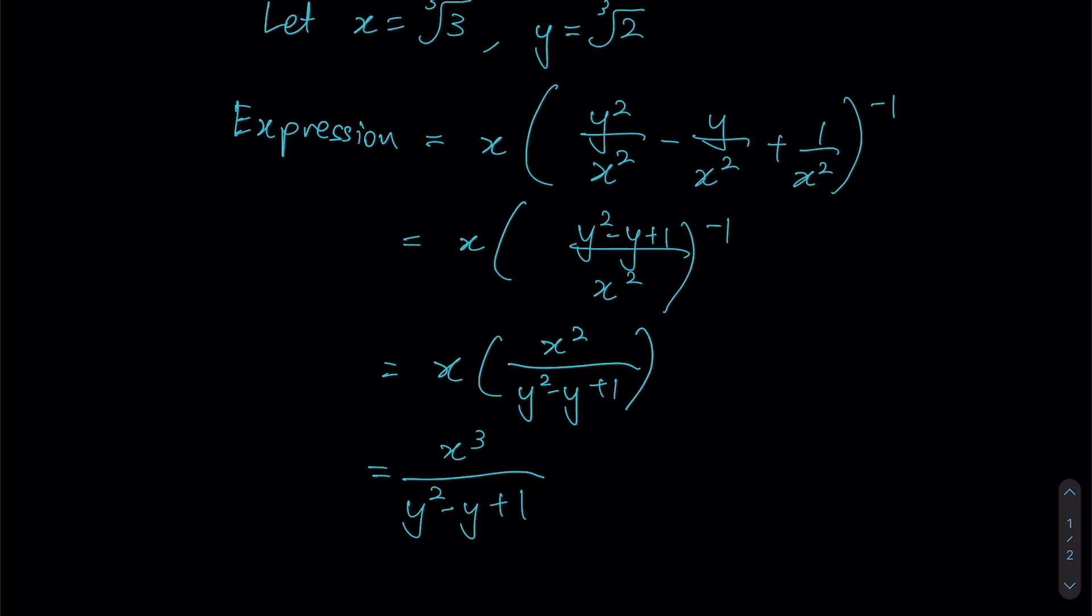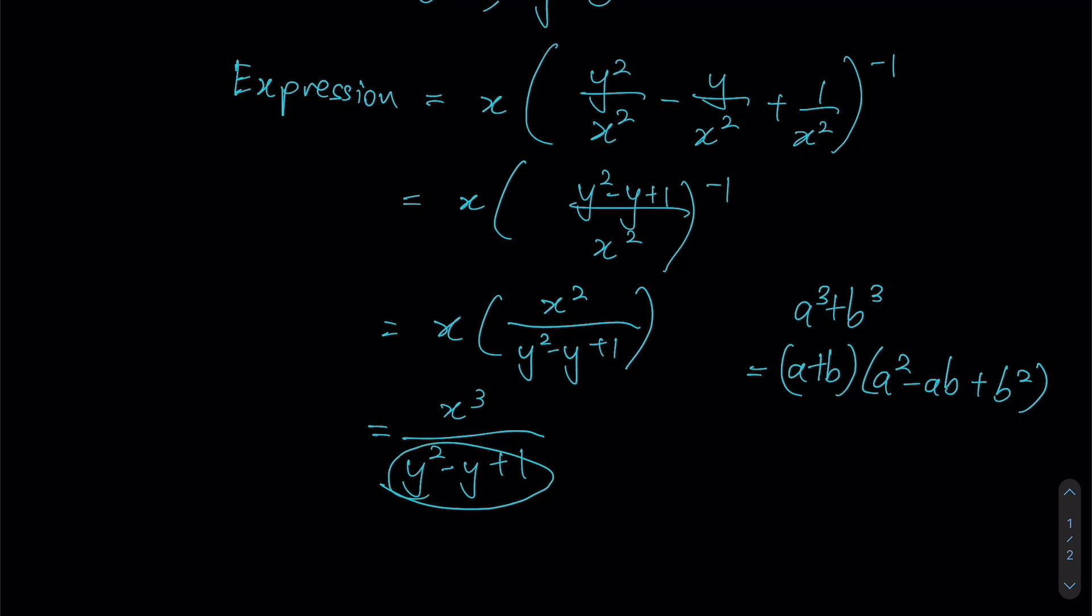We have to start thinking about how we can possibly introduce a y cubed into the equation, which is great because if you recall one of the cubic identities, of the form a cubed plus b cubed, this can be written of the form a plus b multiplied by a squared minus ab plus b squared.